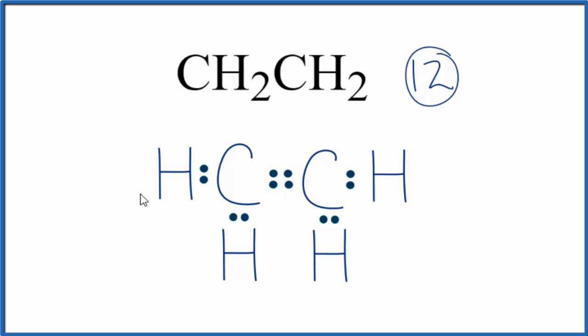So now each hydrogen has two. That's good. This carbon here, it has 2, 4, 6, 8. It has its octet still. This carbon here, 2, 4, 6, 8. It has an octet, and we're done.